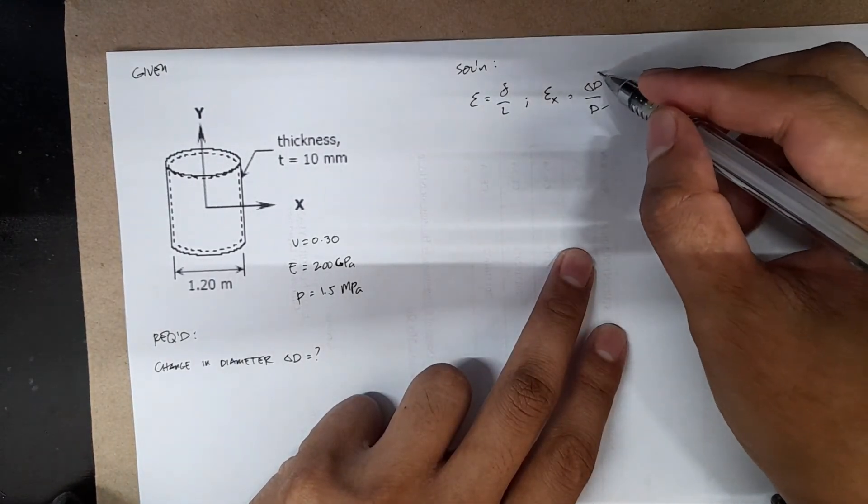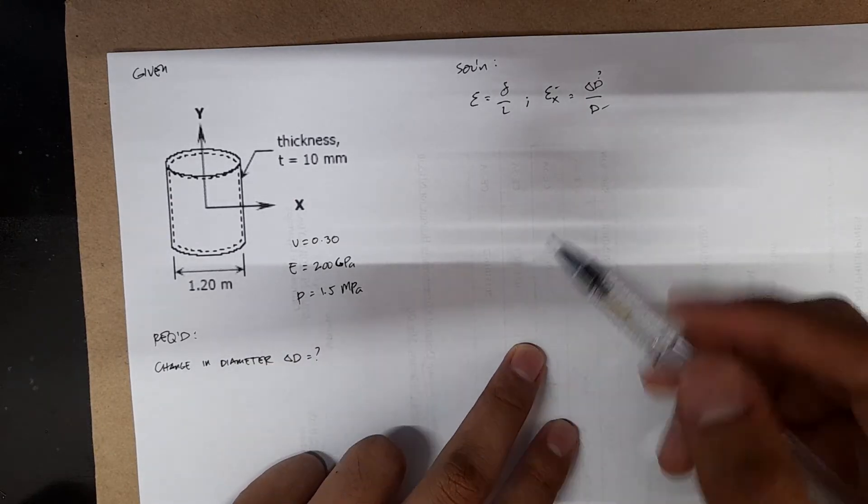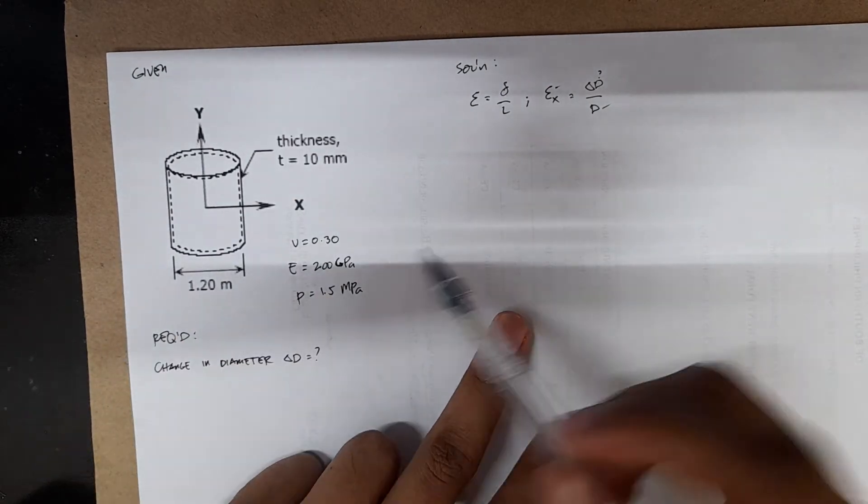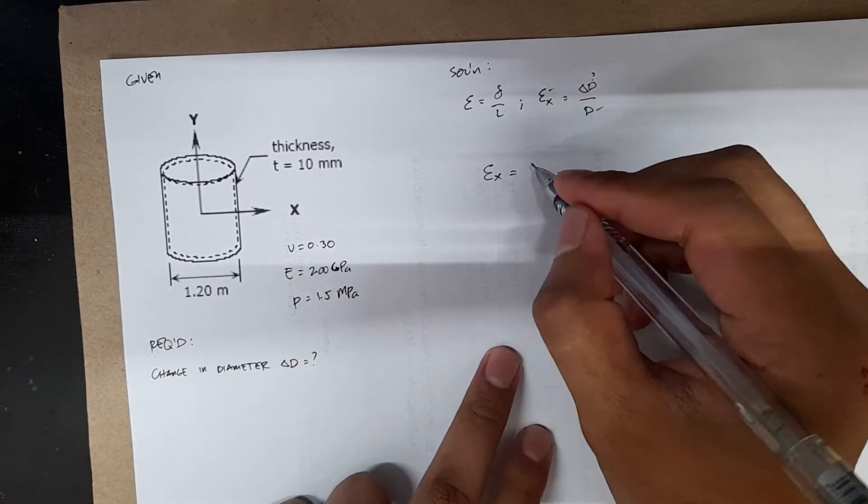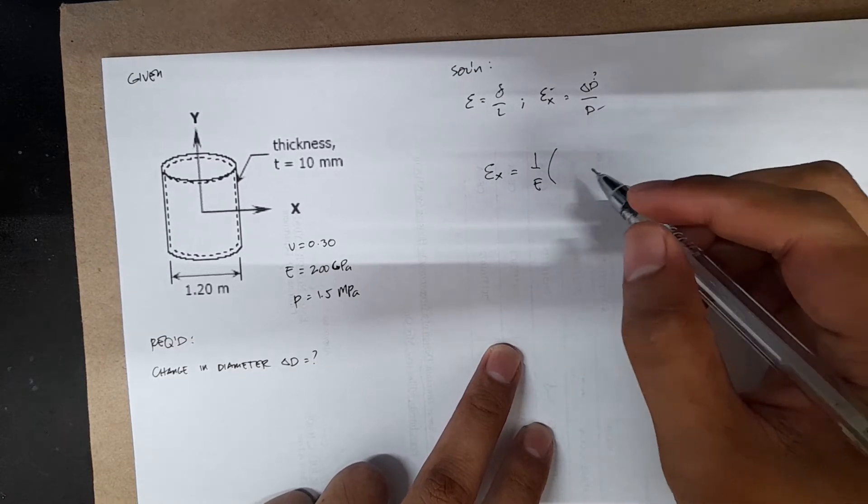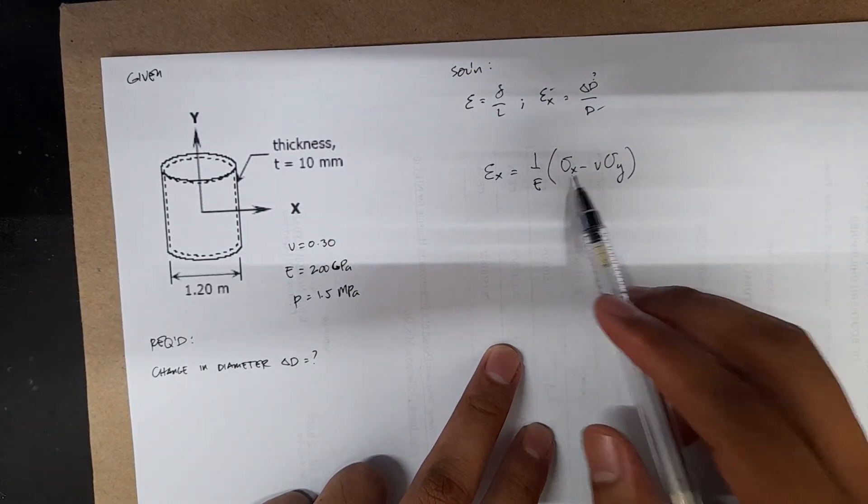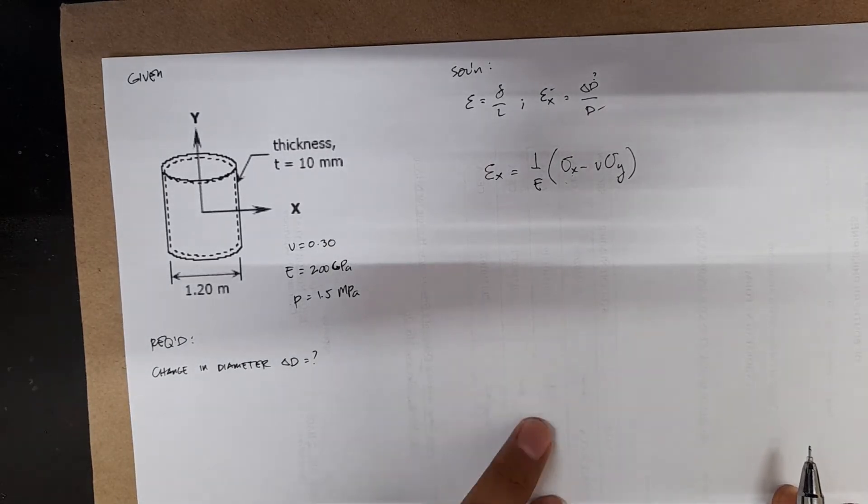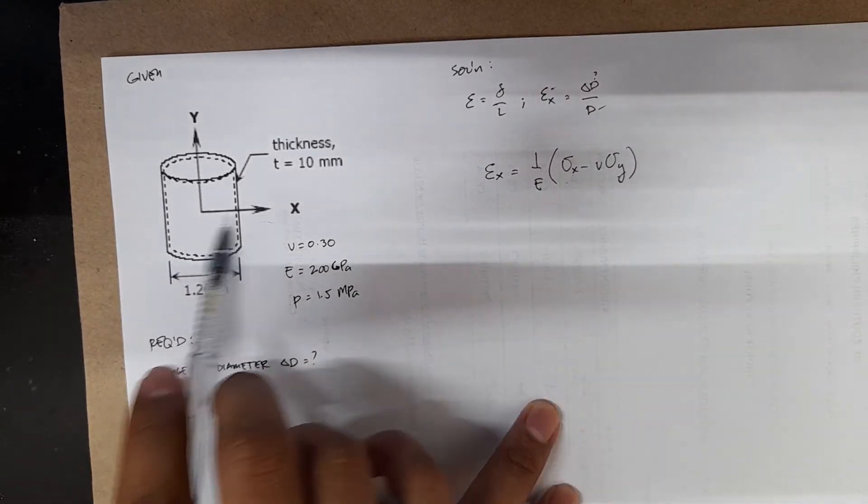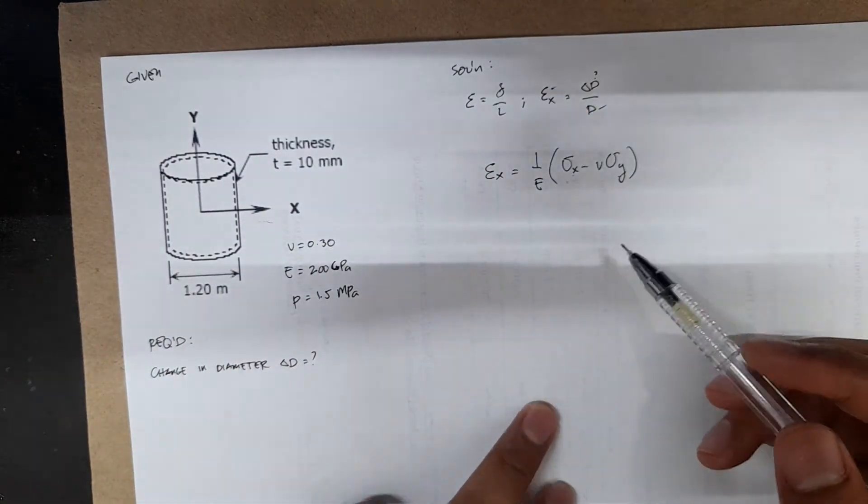This is given, this is what is asked, and this is also unknown. We will get this to get this. Since it's a biaxial deformation and then we are concerned with the change along the x direction, we have strain x is just equal to 1 over E times stress x minus v stress y. And we can calculate both of these using your longitudinal and tangential stresses.